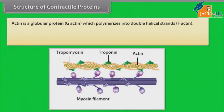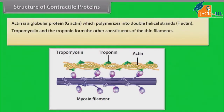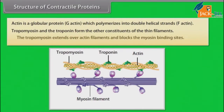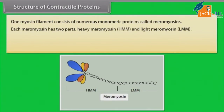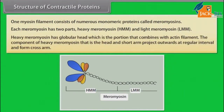Actin is a globular protein (G-actin) which polymerizes into double helical strands (F-actin). Tropomyosin and troponin form the other constituents of the thin filaments. The tropomyosin extends over actin filaments and blocks the myosin binding sites. One myosin filament consists of numerous monomeric proteins called meromyosins. Each meromyosin has two parts: heavy meromyosin (HMM) and light meromyosin (LMM). The heavy meromyosin has a globular head that combines with the actin filament, and its head and short arm project outwards at regular intervals to form cross-arms.